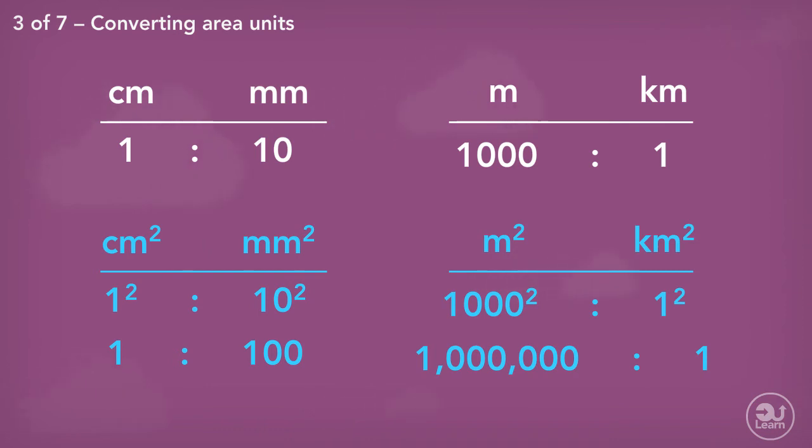Centimeters to millimeters is 1 to 10. Therefore, centimeters squared to millimeters squared is 1² to 10², which is 1 to 100. Meters to kilometers is 1,000 to 1, so meters squared to kilometers squared is 1,000² to 1², which is 1,000,000 to 1.